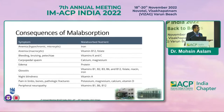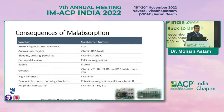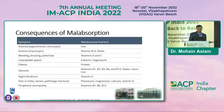Consequences include iron deficiency anemia, macrocytic anemia due to B12 or folic acid deficiency, bleeding, bruising, and petechiae due to vitamin K and C deficiencies, carpopedal spasm due to calcium deficiency, edema from protein and albumin deficiency, glossitis from B-complex deficiency, night blindness from vitamin A malabsorption, pain in limbs and bones with pathological fractures from calcium and vitamin D deficiency, peripheral neuropathy from B12, B1, and B6 deficiencies.